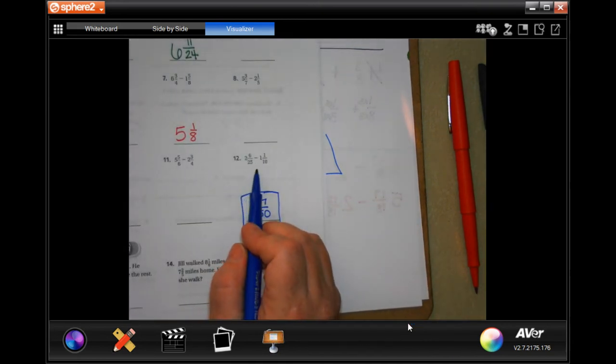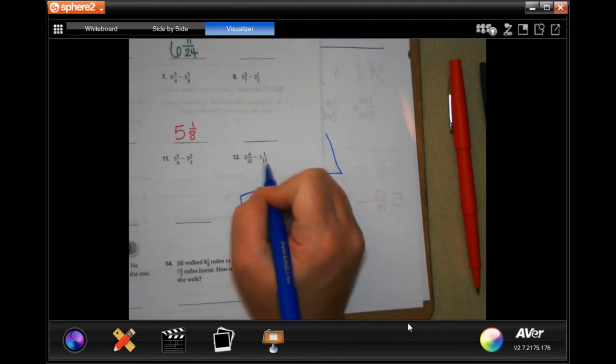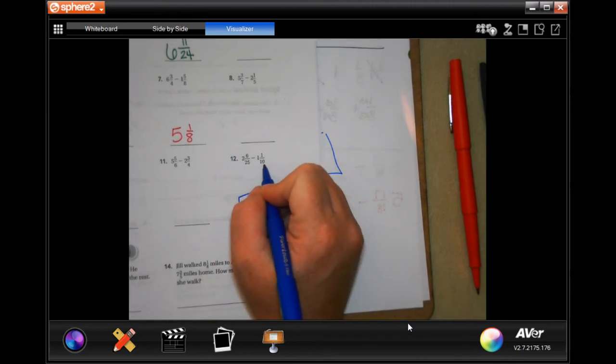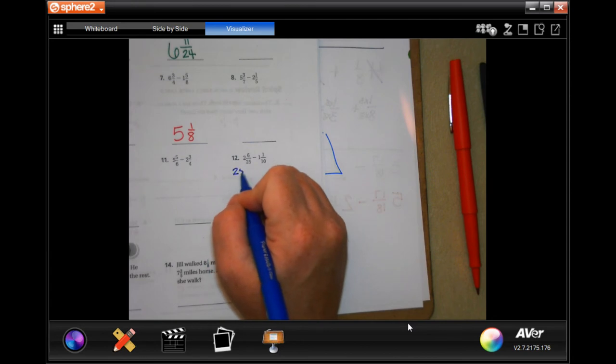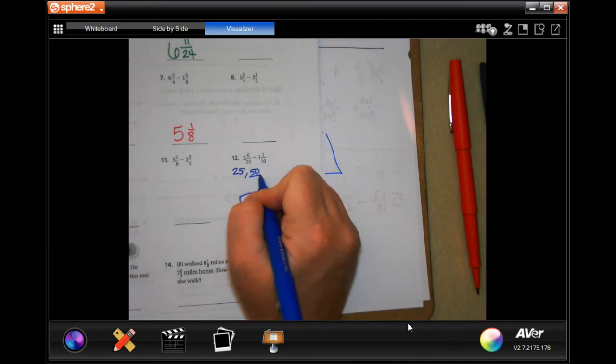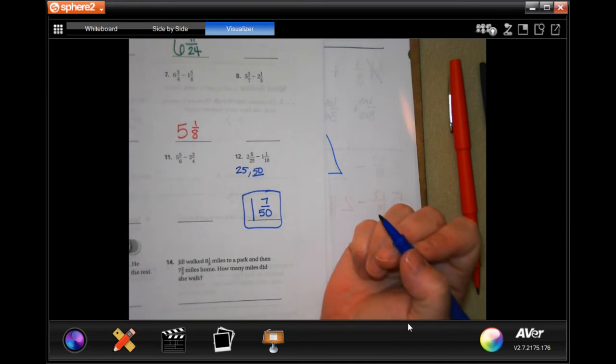Sometimes you see those big numbers and you get scared. Just write out the multiples. So I'm just going to write out my multiples of 25 until I get one that ends in a 0, because every multiple of 10 ends in a 0. So when I go 25 and then 50, well, boom, there's 50. That's my denominator.